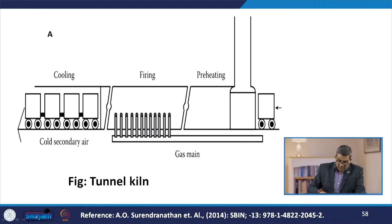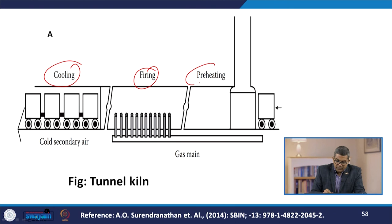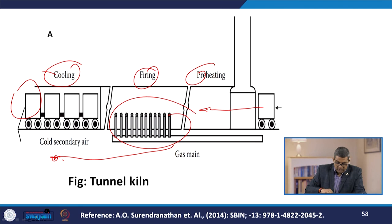This is a typical shape of a tunnel kiln, showing the different stages: cooling, firing, and preheating. Gas flows in a specific direction, and after cooling, the refractory bricks are discharged.